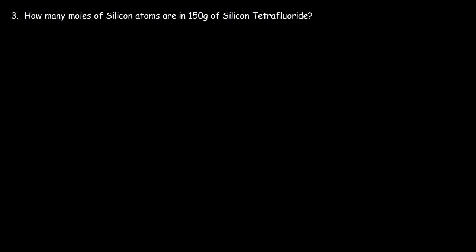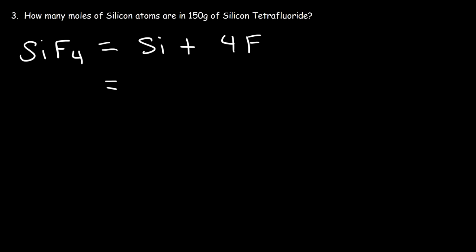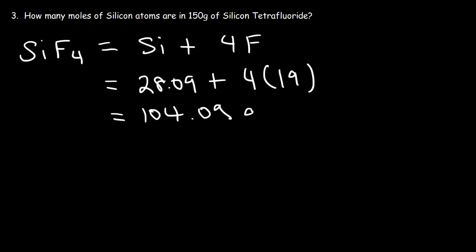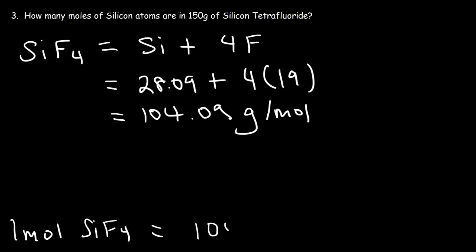Number three: how many moles of silicon atoms are in 150 grams of silicon tetrafluoride? This problem involves a little more work. First, find the molar mass of silicon tetrafluoride. The chemical formula is SiF4 — tetra means four — so the compound has one silicon atom and four fluorine atoms. The atomic mass of silicon is 28.09 and fluorine is about 19. Four times 19 is 76, and 76 plus 28.09 is 104.09 — that's the molar mass. One mole of silicon tetrafluoride has a mass of 104.09 grams.